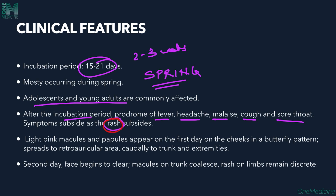The skin lesions are light pink macules — patch-like lesions that are not raised to papules. They first appear on the cheeks in a butterfly pattern, then spread to the retroauricular area, then downward to the trunk and extremities. On the second day, the facial rash clears, the macules on the trunk coalesce, and the rash on the limbs becomes more discrete. It spreads caudally: face, then trunk, then limbs.